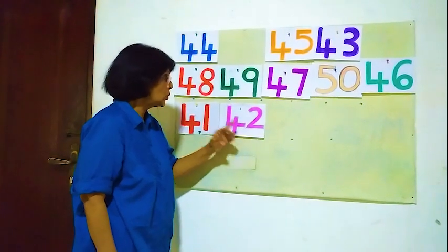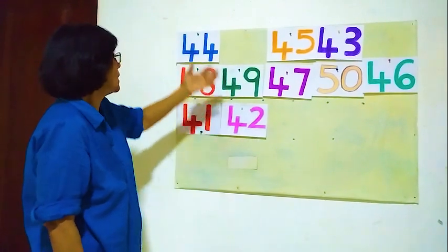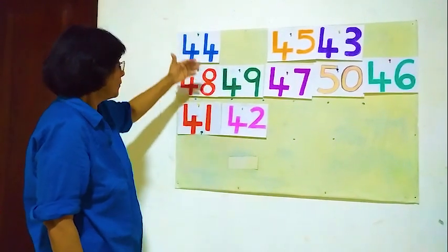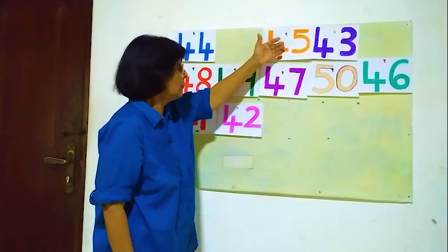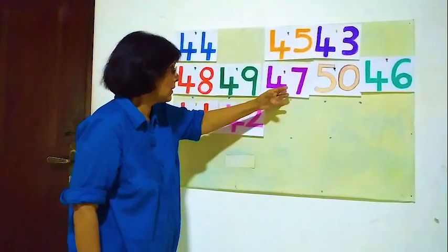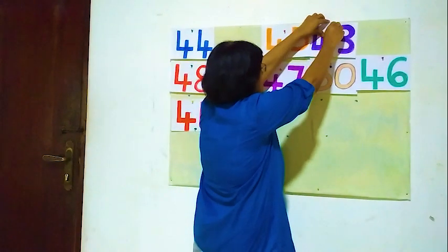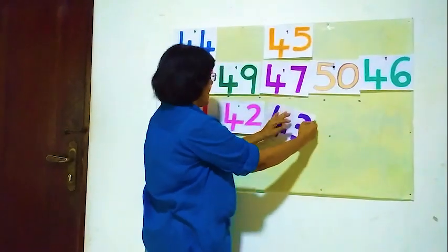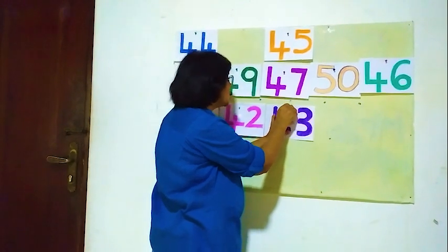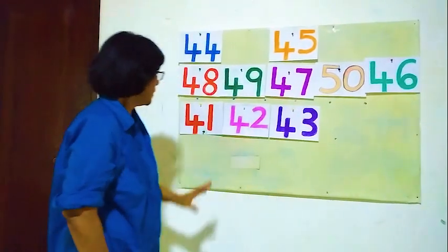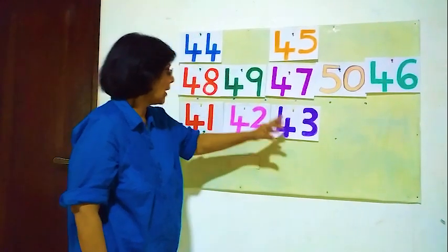After 42, the next number is 43. Here 44, 49, 45, 47 — but 43 must come here. After 42, 43. So: 41, 42, 43.